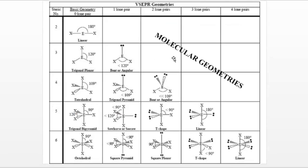Electron geometry is simpler — it represents just the steric number and does not differentiate between lone pairs and bonds. So for steric number three, all cases are trigonal planar as electron geometry. For steric number four, they're all tetrahedral. For five, trigonal bipyramidal, and for six, octahedral. That's because we don't differentiate between lone pair electrons and bonds when determining electron geometry.